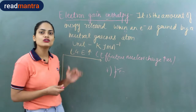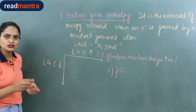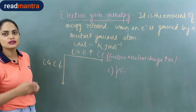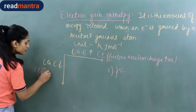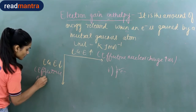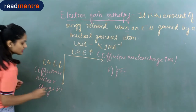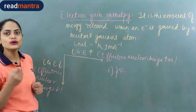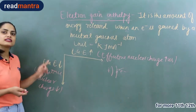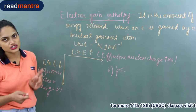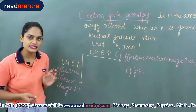Across the period, the value of electron gain enthalpy becomes more negative. Down the group, size increases and effective nuclear charge decreases. So the incoming electron has less attraction to the nucleus, and the electron gain enthalpy decreases. Moving from top to bottom, it becomes less negative.